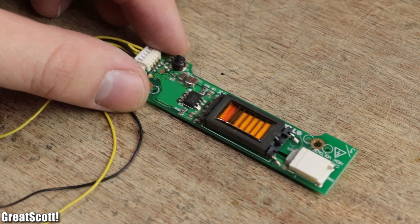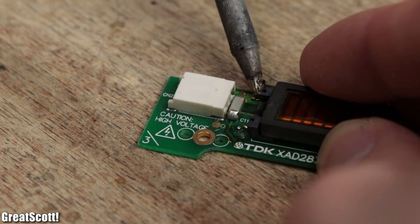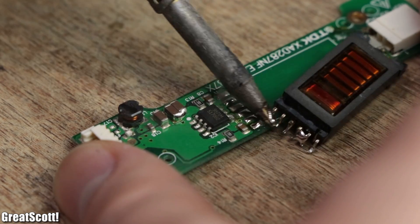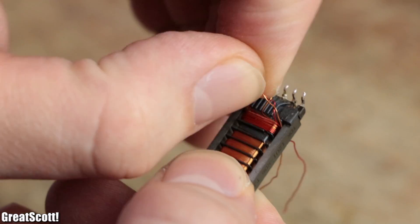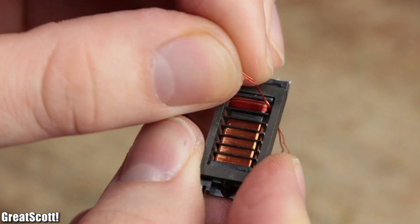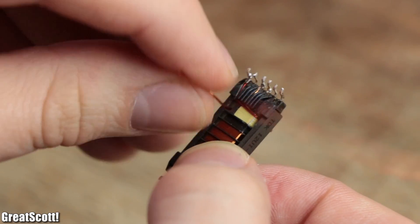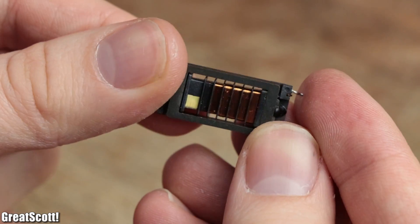Thankfully, I had another CCFL inverter from an old monitor laying around that contained a smaller transformer. So I desoldered it from the circuit, removed its protective tape and started unwinding its center tap primary coil. It was rather interesting to find out that each coil also consisted of 14 turns, just like the bigger CCFL transformer. But strangely enough, there was no feedback coil to be found.